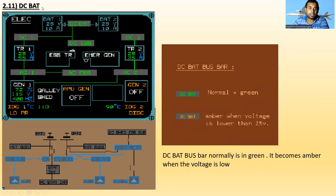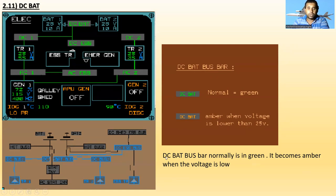Next is the DC battery bus. The DC bat bus bar is normally green and becomes amber when the voltage is lower than 25 volts.